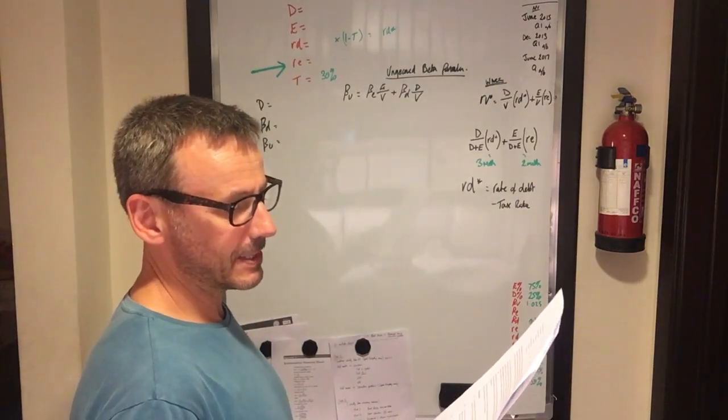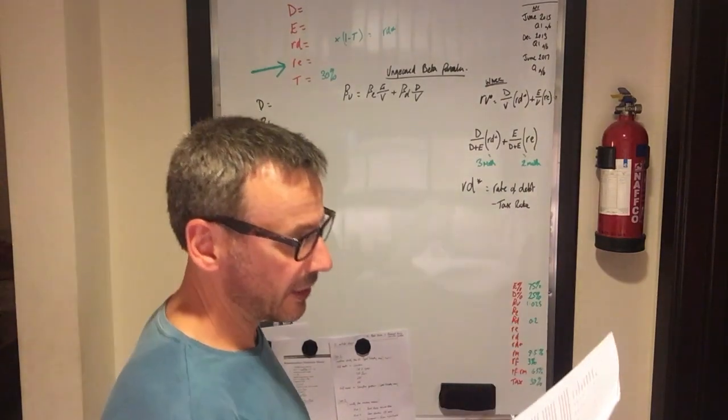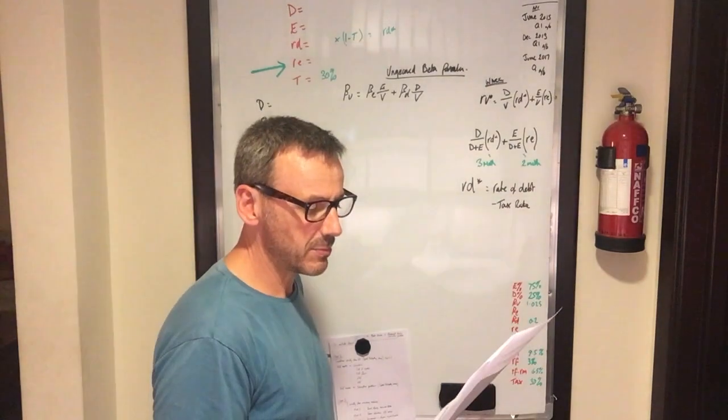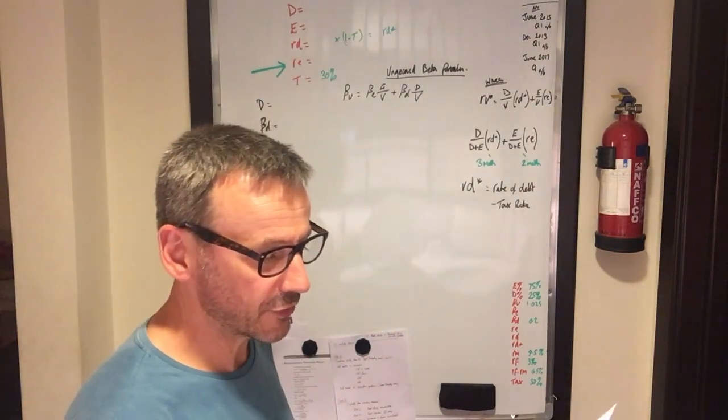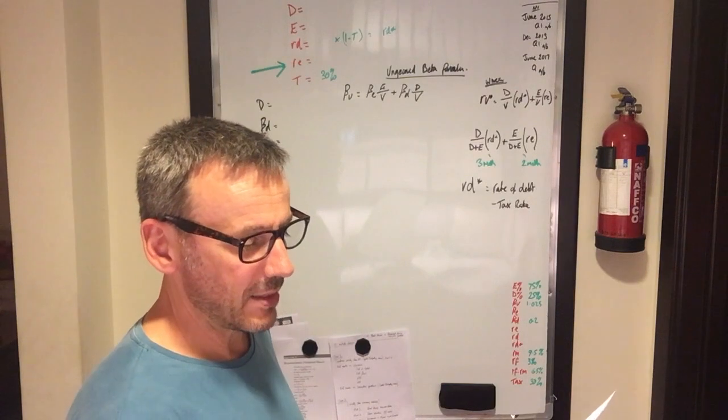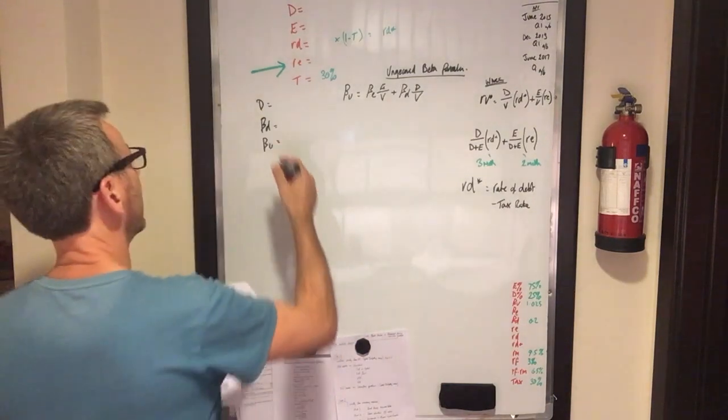You've estimated the debt beta to be at 0.2, comparing the company with similar companies in the sector. The ungeared beta for the company is 0.95. Risk-free rate is at 4%, the equity risk premium is at 6%.